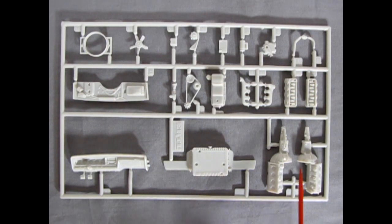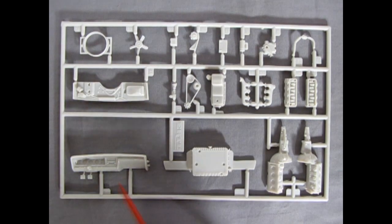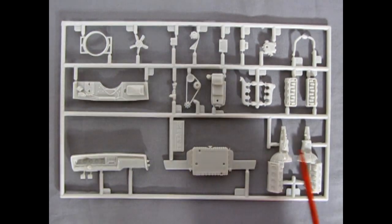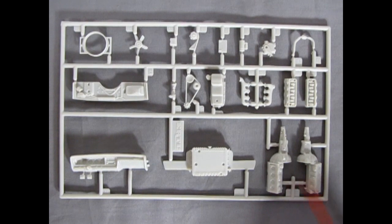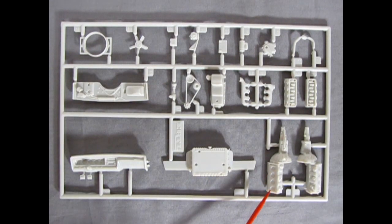Now this parts tree has a lot of the under the hood details including the dashboard here. Which doesn't go under the hood. But the rest of it all does. So you've got your engine block with your transmission. You also have the cylinder holes molded in there.